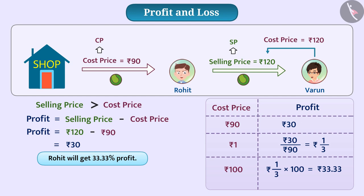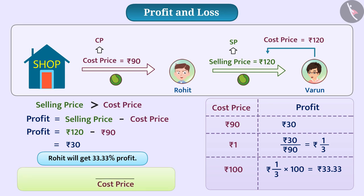The profit percentage is always obtained on the cost price, so we take the cost price as the base. We write the formula for profit percentage as: Profit Percentage = (Profit ÷ Cost Price) × 100%.